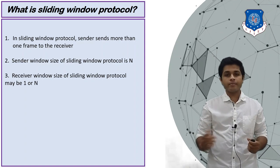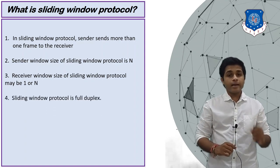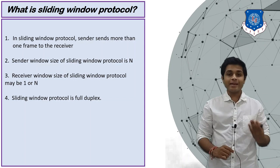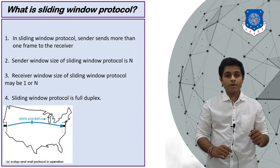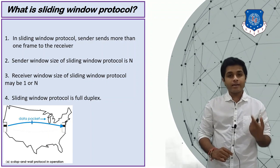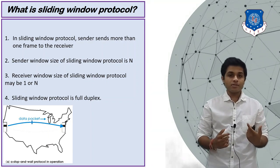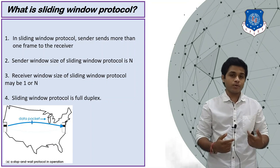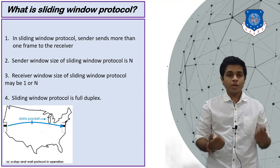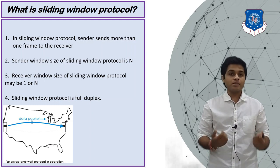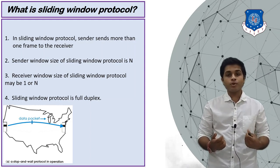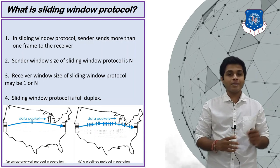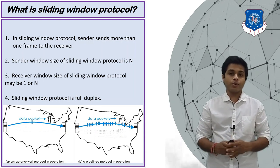The sliding window protocol is full duplex, meaning the sender can send multiple packets and receive at the same time. In stop-and-wait, the sender sends a packet and waits for the acknowledgement — this is very time consuming because after every packet the sender expects an acknowledgement, adding significant delay. That problem is overcome in the sliding window, where we send more than one packet at a time. Stop-and-wait is half duplex, but sliding window is full duplex.